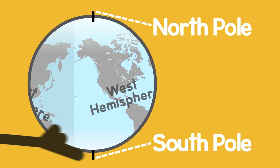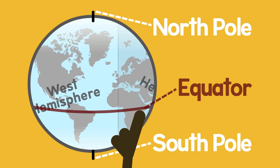And in between the poles, right in the center, is an imaginary line we call the equator.